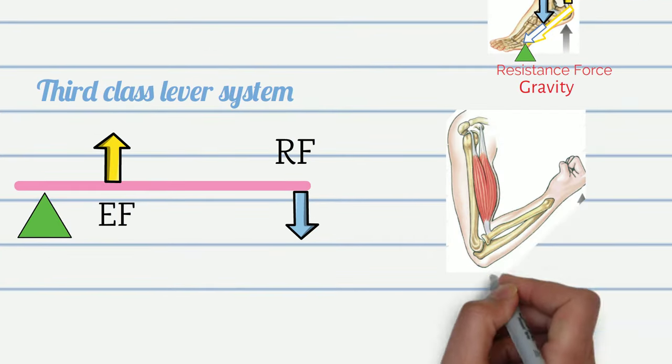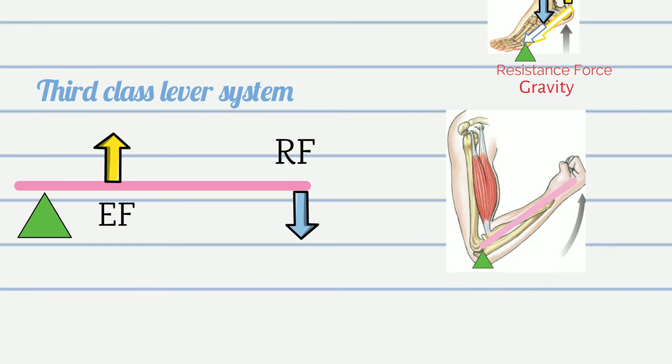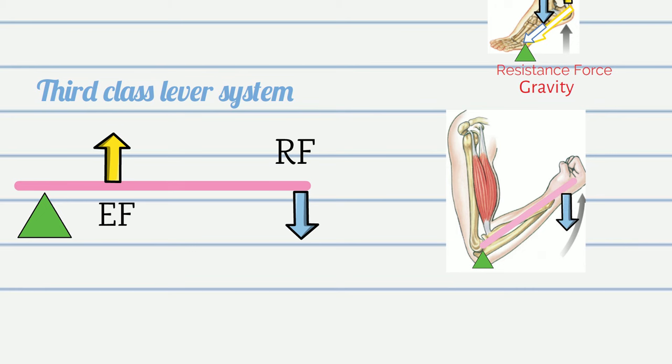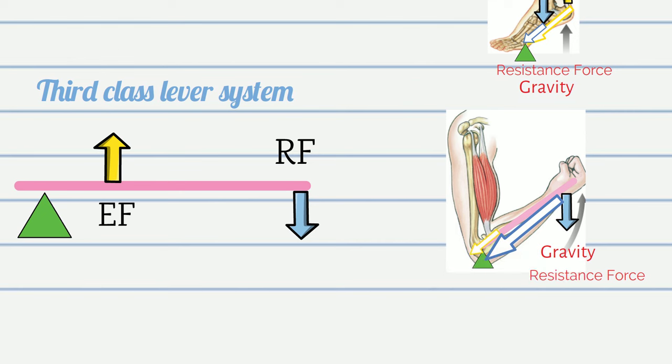An example here is a concentric contraction of biceps against gravity. A resistance force, which is gravity, produces a clockwise torque. The gravitational moment arm is located further away from the axis of rotation than the moment arm of biceps.